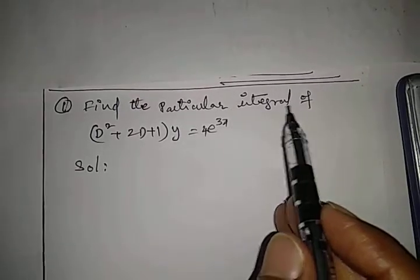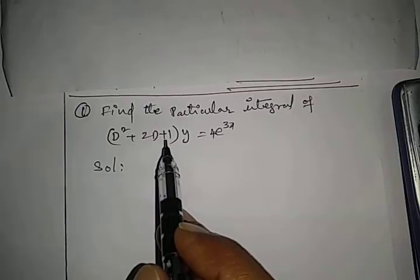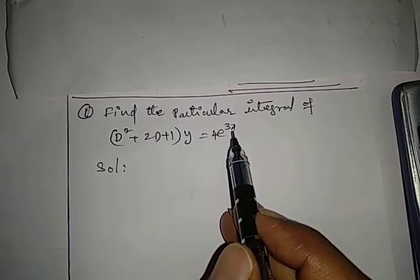Find the particular integral of (D² + 2D + 1)y = 4e^(3x).